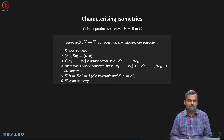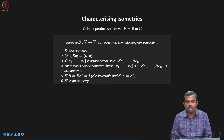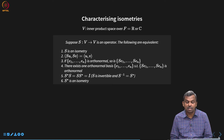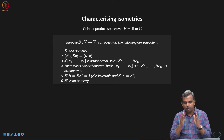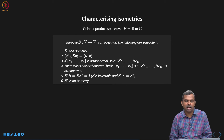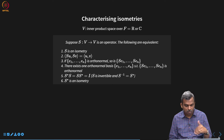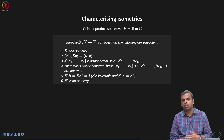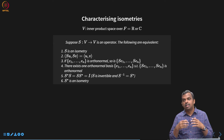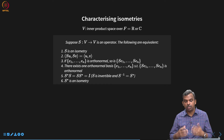Now let us prove these implications. For 1 implies 2: if norms are preserved, inner products are also preserved because inner products can be defined using norms. We use the polarization identity: ⟨Su, Sv⟩ = (‖Su + Sv‖² − ‖Su − Sv‖²)/4. Since S is linear, Su + Sv = S(u+v), and since S preserves norms, ‖S(u+v)‖² = ‖u+v‖², so the expression equals (‖u+v‖² − ‖u−v‖²)/4 = ⟨u, v⟩.